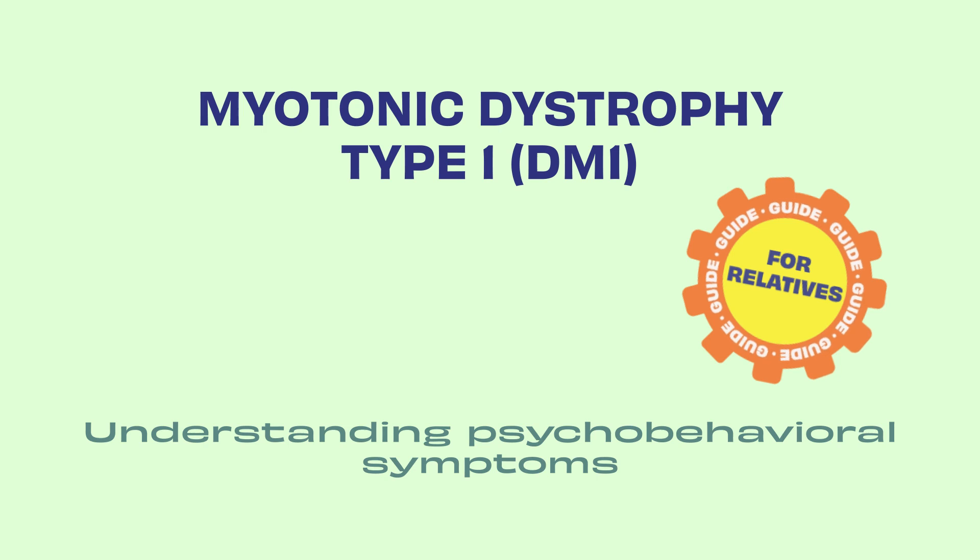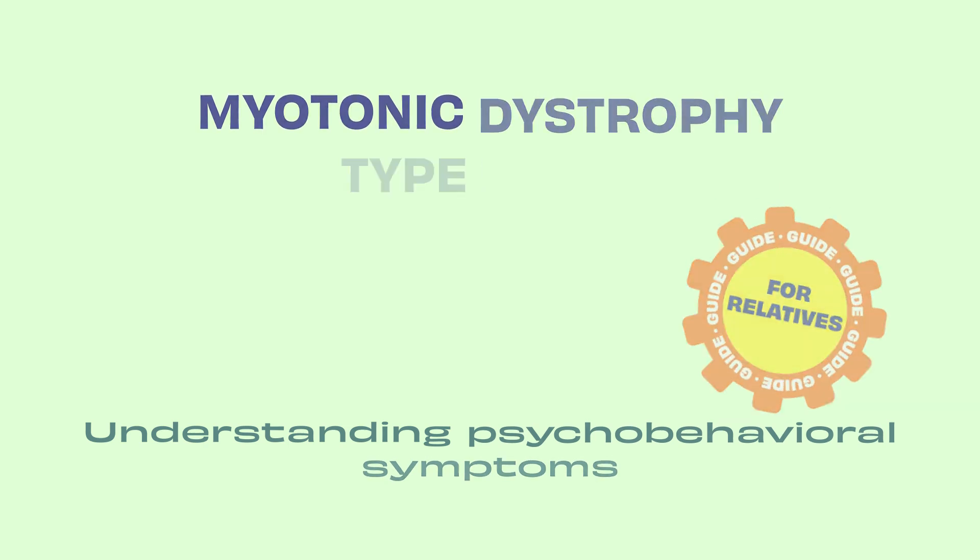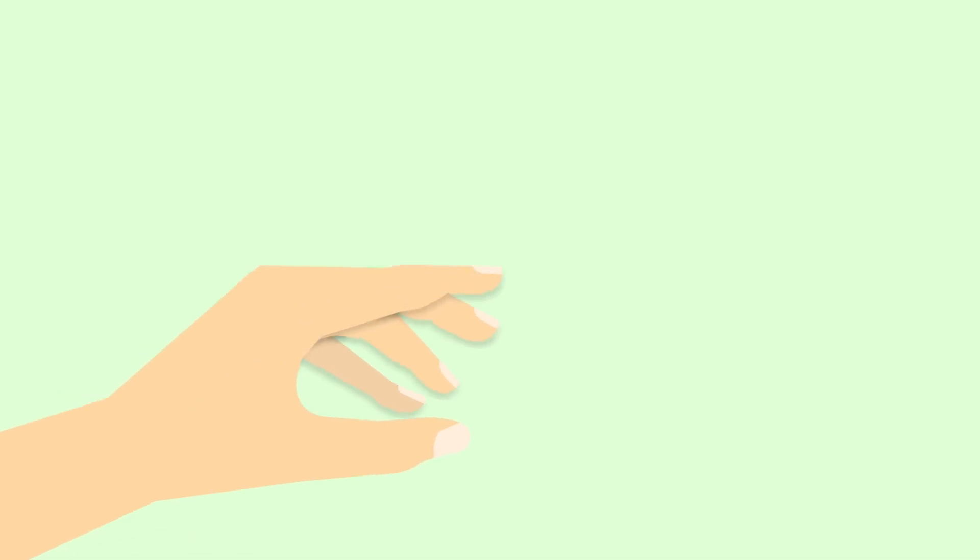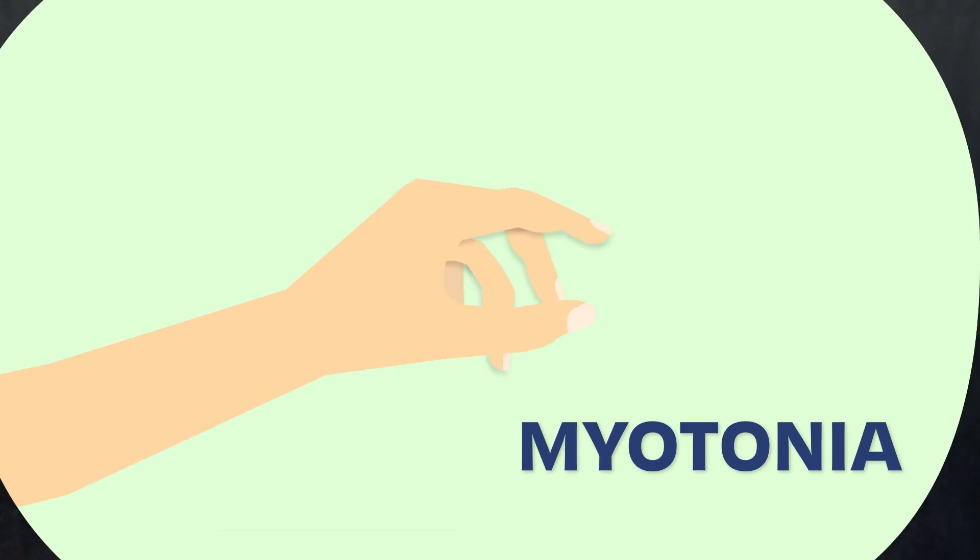Myotonic dystrophy type 1, or DM1, is a genetic disease that makes muscle relaxation after contraction slower and more difficult, a condition called myotonia. It also leads to a progressive weakening of many muscles in the body.